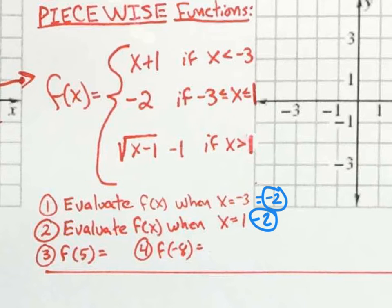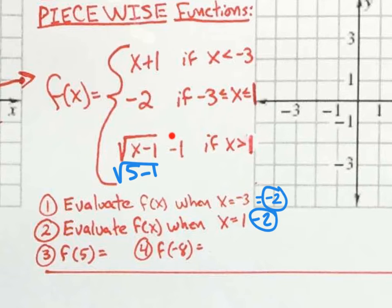When you plug in five, you have five minus one under the square root — that's four. The square root of four is two. Then two take away one is one. So the final answer for f of five is positive one.